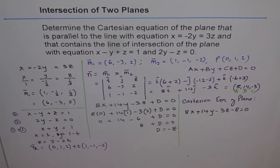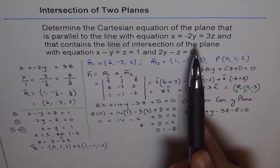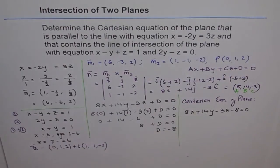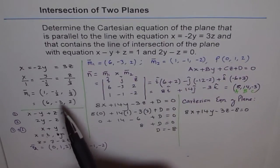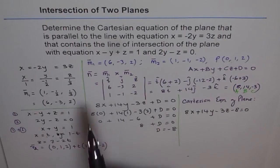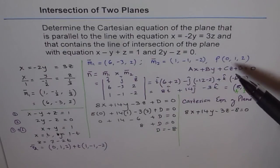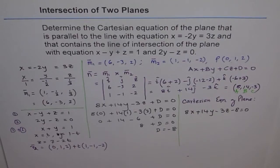These solutions can be time-consuming and error-prone, so go slowly and understand each step. What we did was: first find one direction vector from the given line, then find the line of intersection of the two planes to get a point and a second direction vector, then take the cross product to get the normal, and finally substitute the point to find D and write the Cartesian equation. After doing some questions on two planes, we will do intersection of three planes.